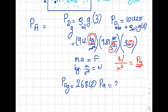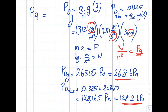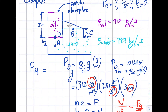So PD gauge is 26.8 kilopascals. If somebody asks for the absolute value, I do 101,325 plus 26,840, which gives 128,165 Pascals, or 128.2 kilopascals. These are the two same pressures expressed differently. I'm pointing this out in case you get exposed to absolute pressure questions, though typically gauge is what's asked for.